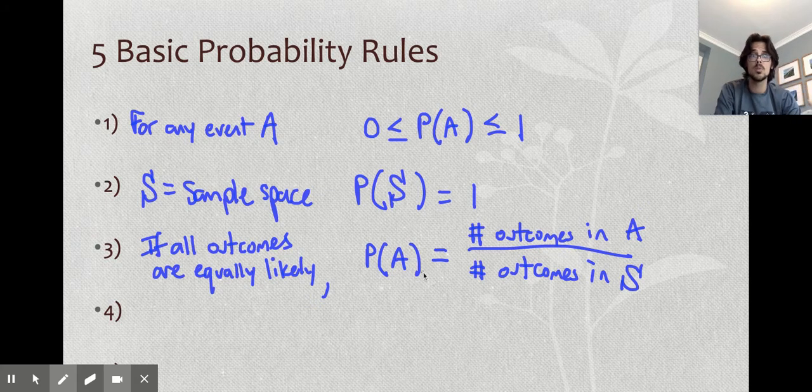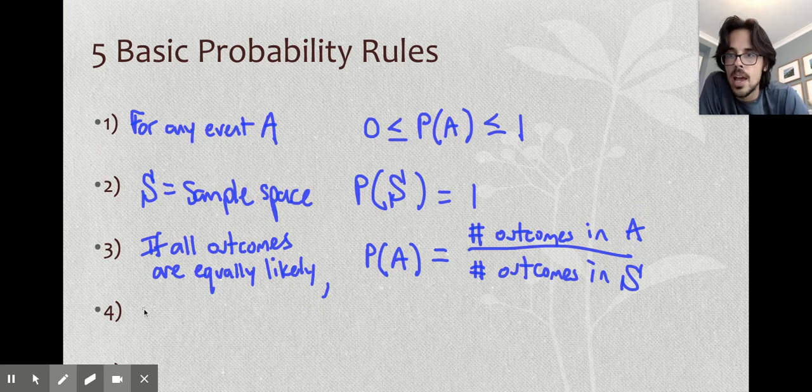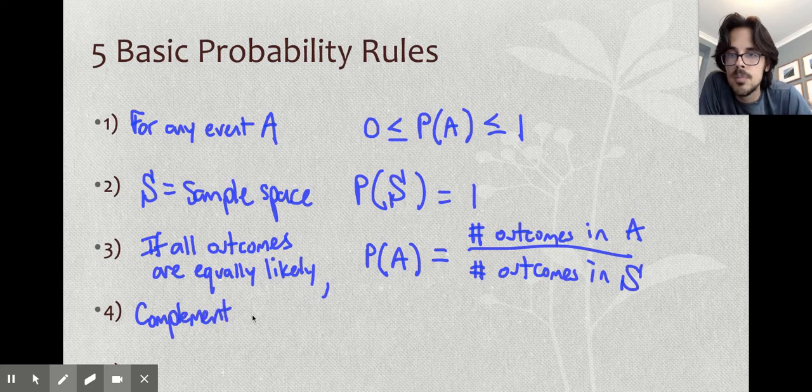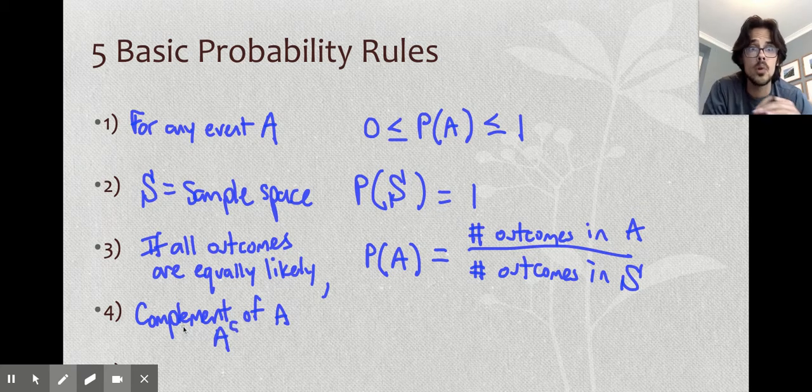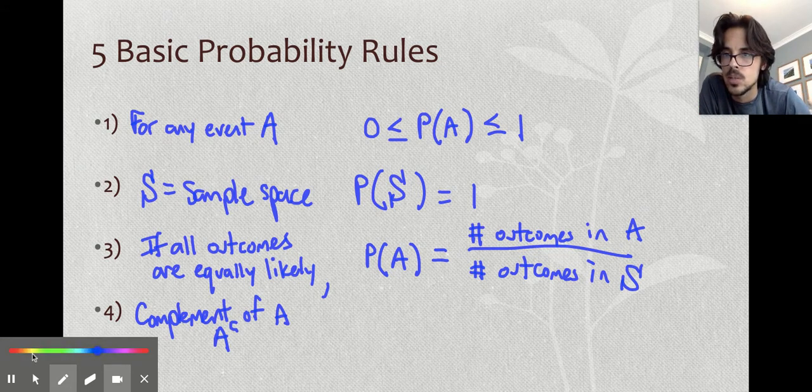The last example was, out of the eight times, how many have at least one coin on heads? Well, it would be seven out of eight. That's all that means. Two more. You have what's called the complement of an event. The complement of A is A with a little exponent of C. The complement means everything not in the original. So complement is everything not in A.